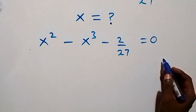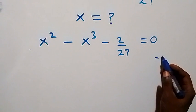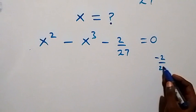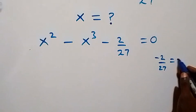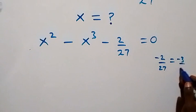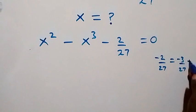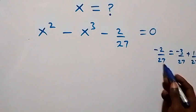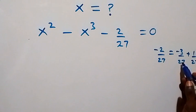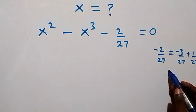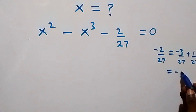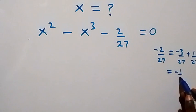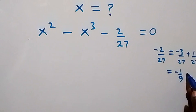From here we can write minus 2 over 27 as minus 3 over 27 plus 1 over 27. This will still be minus 2 over 27. Then minus 3 over 27 can be reduced to minus 1 over 9.